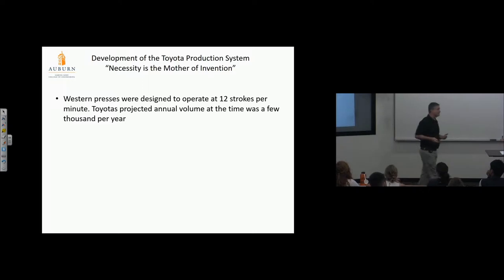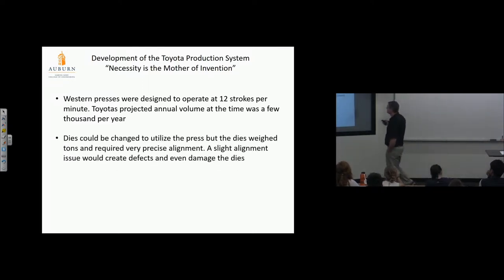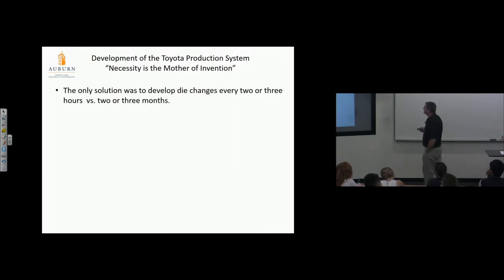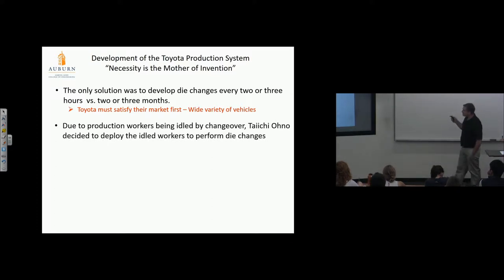Imagine they don't have an entire large operation of presses stamping out the same thing over and over again. They just have a handful of presses. Obviously, they need to change these over rapidly if they're going to get full use out of them. Detroit didn't do that, so they have to come up with a method, and that's the SMED we'll talk about later. Western presses were designed to operate at 12 strokes per minute. Toyota's projected annual volume at the time was a few thousand per year. So if you're buying these presses, they're absurdly underutilized, and they're way too expensive to accommodate the growth of their industry.